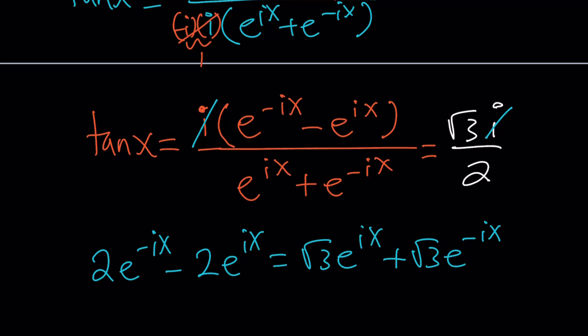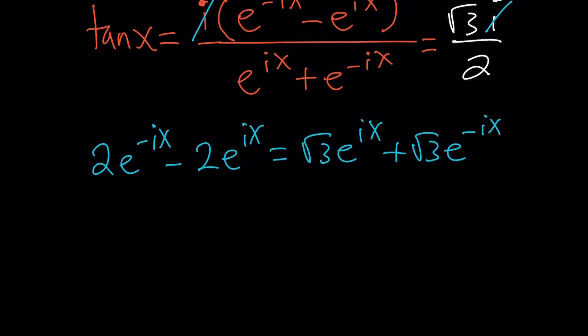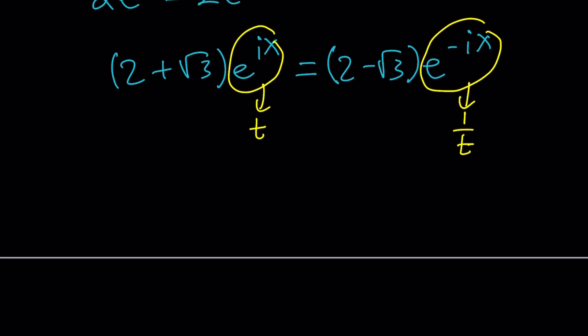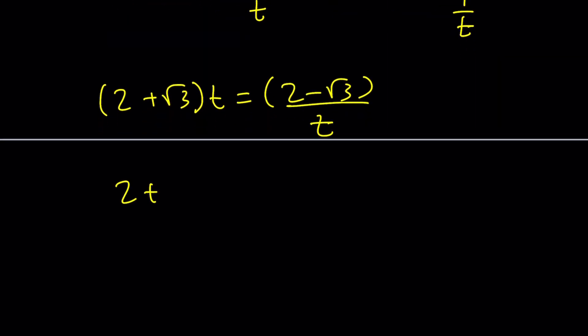i cancels out, so we can divide both sides by i. We get 2e to the negative ix minus 2e to the ix equals square root of 3e to the ix plus square root of 3 times e to the power of negative ix. Let's combine like terms. I'm going to put the positive exponents on the same side. 2 plus root 3e to the ix equals 2 minus root 3 over t.